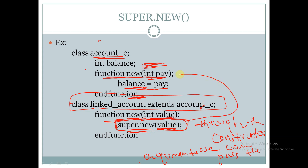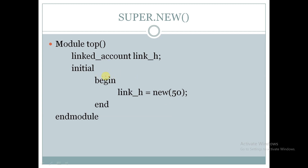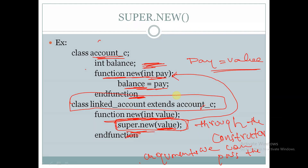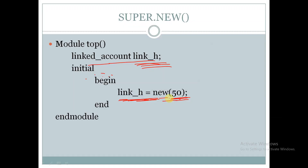This value will be passed to the base class constructor, so pay will be equal to value, and balance will be equal to pay. In the top module, we create a handle for linked_account called link_h, and within the initial begin block we create an object for this handle link_h, passing the value 50 to the constructor. So 50 will be copied to value, value will be sent to pay, and balance will be equal to 50.